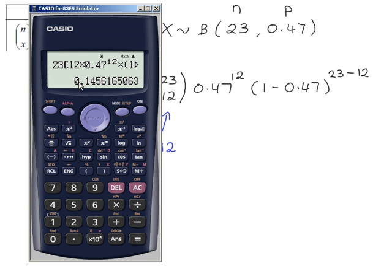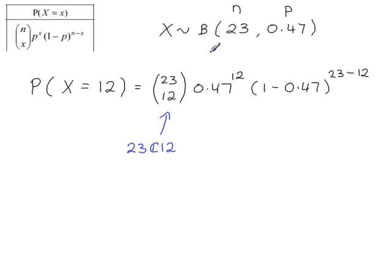There's the answer. It's good practice to round the value to three significant figures. The first significant figure is 1, that's the second, that's the third. Looking at the fourth one, we're going to round up, so the answer is 0.146.